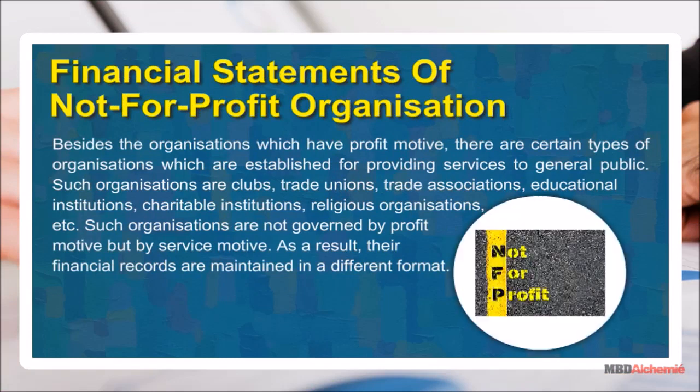Besides organizations which have profit motive, there are certain types of organizations established for providing services to the general public. Such organizations include trade unions, educational institutions, charitable institutions, and religious organizations. Such organizations are not governed by profit motive but by service motive. As a result, their financial records are maintained in a different format.